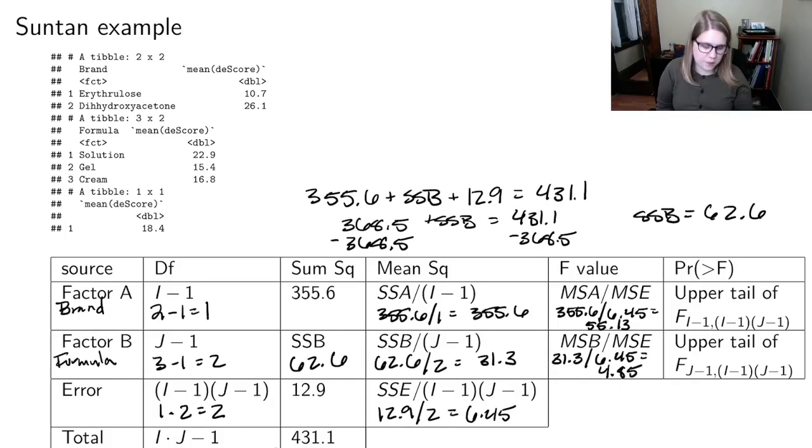And if we wanted to find the P values, we'd need to look in the upper tail of an F distribution with 1 and 2 degrees of freedom or 2 and 2 degrees of freedom. I'm not going to do that right now. But again, my guess would be that this one would be significant and that the second one would not be just because of what I know about the F distribution.